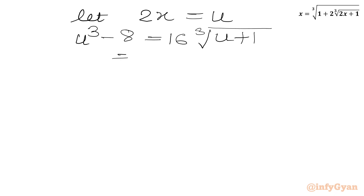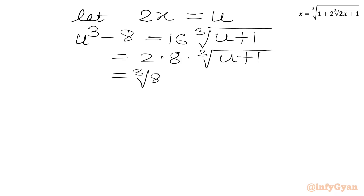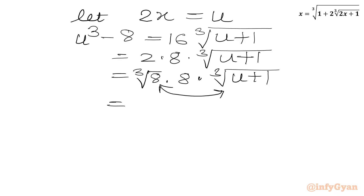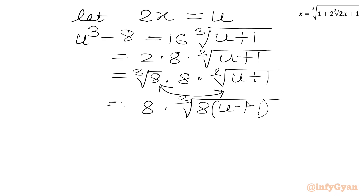Now we can factor 16 as 2 times 8, then we have cube root of U plus 1. We can write this 2 as cube root of 8, then we have 8 and cube root of U plus 1. Now we can combine these two cube roots together and write 8 times cube root of 8 times U plus 1, or we can write 8 times cube root of 8U plus 8.